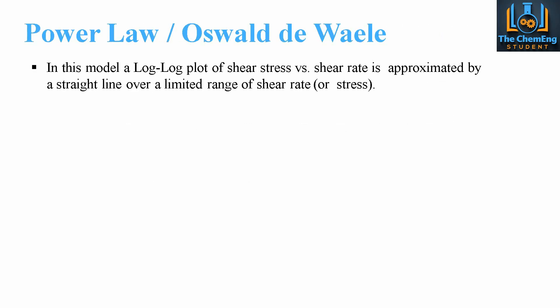The generalized power law model is also known as the Oswald-Duel model. It is a log-log plot of the shear stress versus the shear rate, which is approximated by a straight line over a limited range of shear rates or shear stresses. The straight line gives us the linear relationship whereby if we know the value of the shear rate, we can determine the value of the shear stress.